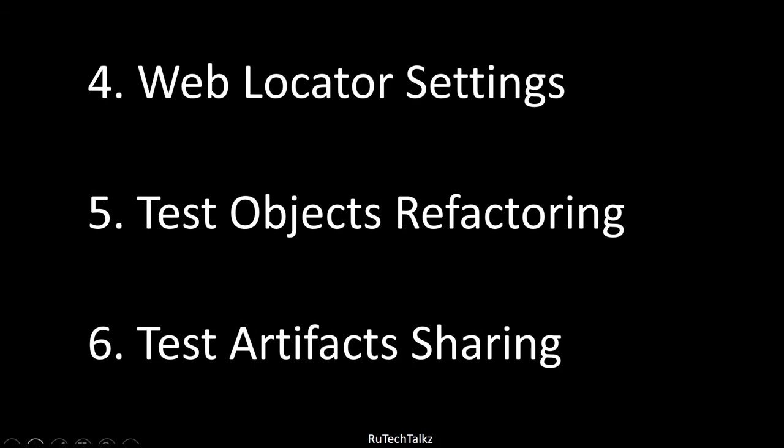In Katalon Studio Enterprise you get web locator settings, which is not available in Katalon Studio. It provides you more options for locators. In Katalon Studio you have locators like ID, name, or type. If you opt for the enterprise version, you get multiple web locators and they locate the test object based on those attributes. From version 7.6 of Katalon Studio, self-healing test was launched, so this web locator setting may also be less useful.